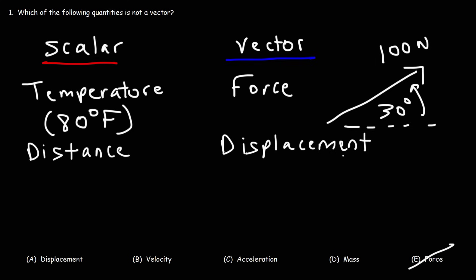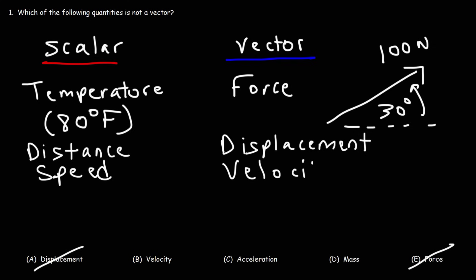If you were to say a person ran 45 meters, you're describing a person's distance because you didn't apply direction to it. But if you were to say a person ran 45 meters east, you're now describing the displacement of the person. So displacement is basically distance with direction, and we can eliminate answer choice A. Speed is a scalar quantity and velocity is a vector quantity — velocity is speed with direction.